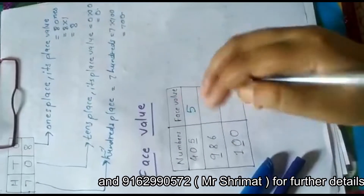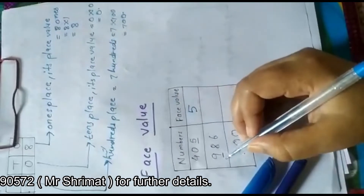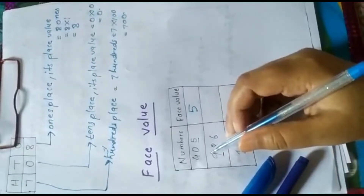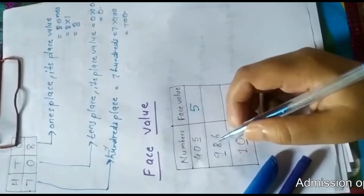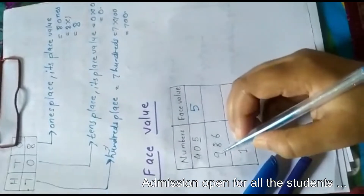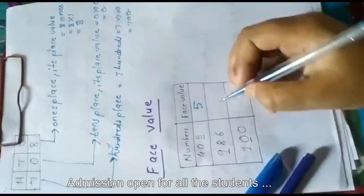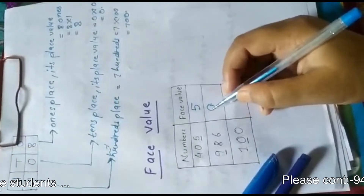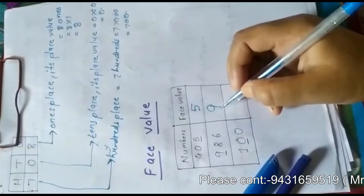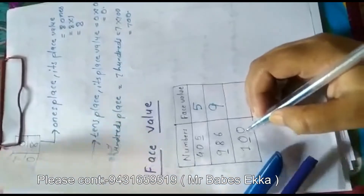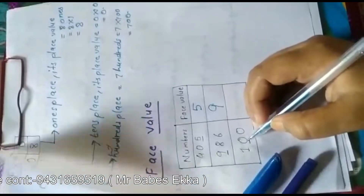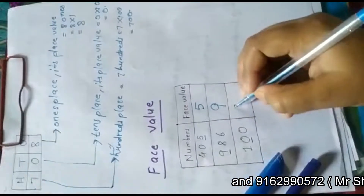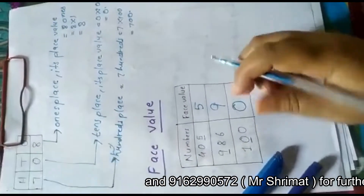Now let us take a second example. Here you can see 9 is underlined, so 9 is at hundreds place. Its place value could be 900, but the face value of 9 is always 9. The actual value of the digit is its face value. In 100, 0 is at tens place, and the face value of 0 is 0.